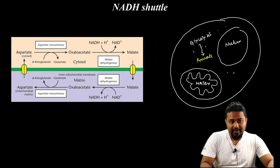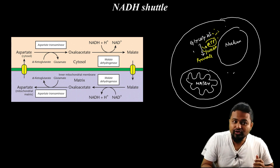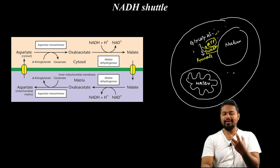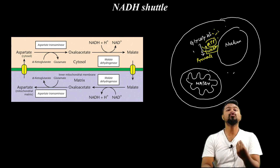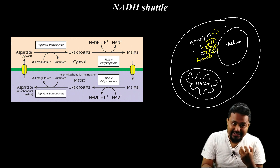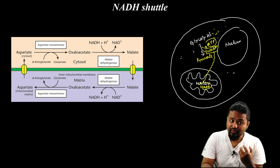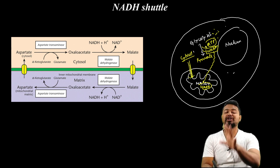From glycolysis we get pyruvate, ATP, and NADH. This ATP can directly be used by the cell. But NADH is more than just ATP for the cell. This NADH comes from glycolysis. So NADH is in the cytosol, but it needs to get to the mitochondrial matrix. NADH from the cytosol needs to reach the mitochondrial matrix via the shuttle system.